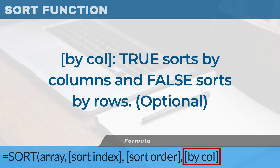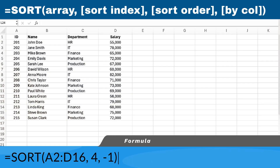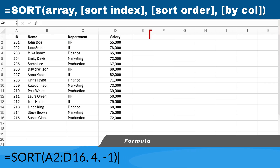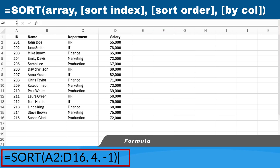Let's walk through an example. Open your Excel workbook and locate your data, making sure it's organized in a table or range. For this example, we have a table with employee data including ID, name, department, and salary. Select the cell where you want the sorted data to appear — we'll use cell F1. We want to sort our data by salary in descending order, so we'll use the formula displayed on the screen. Enter this formula in cell F1 and press enter.